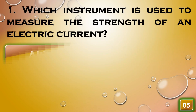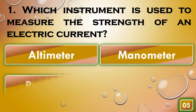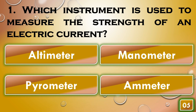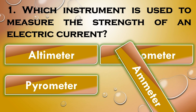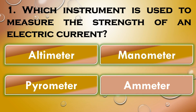Which instrument is used to measure the strength of an electric current? Ammeter is used to measure the strength of an electric current.